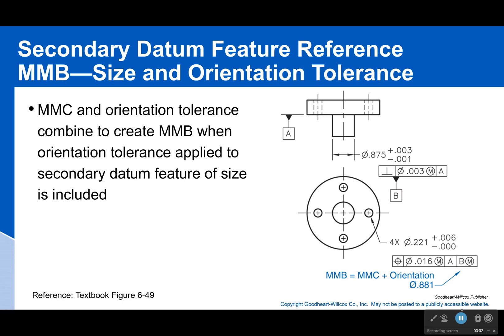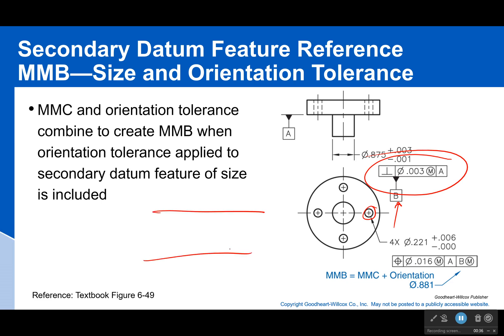Let's talk about a secondary datum feature reference at the max material boundary. In this case we have an orientation tolerance, and we apply datum B to that. It makes sense — it's a cylinder, it works out well. Then we have a location tolerance for these holes. Before, things were connected, but this is a completely different plane and a completely different type of tolerance — it's not connected to what the other was. So how are we going to figure this out?